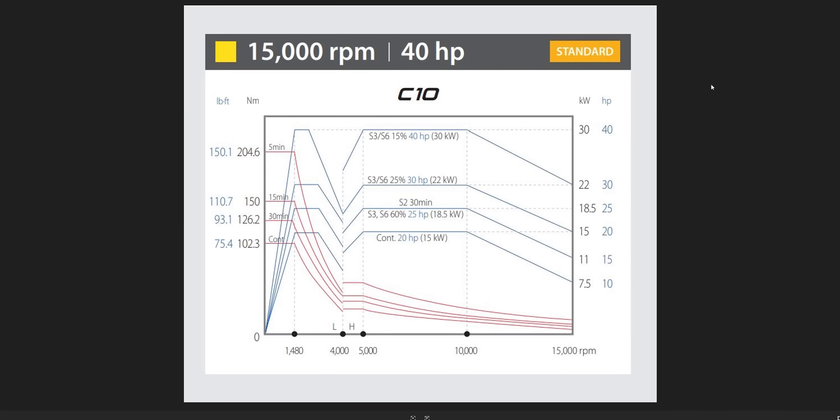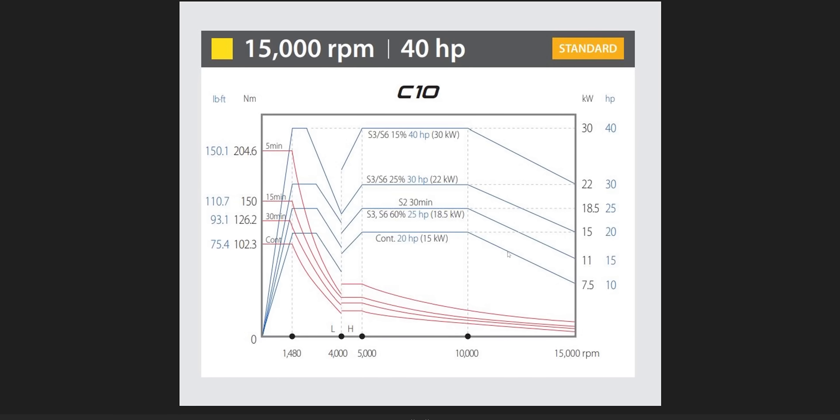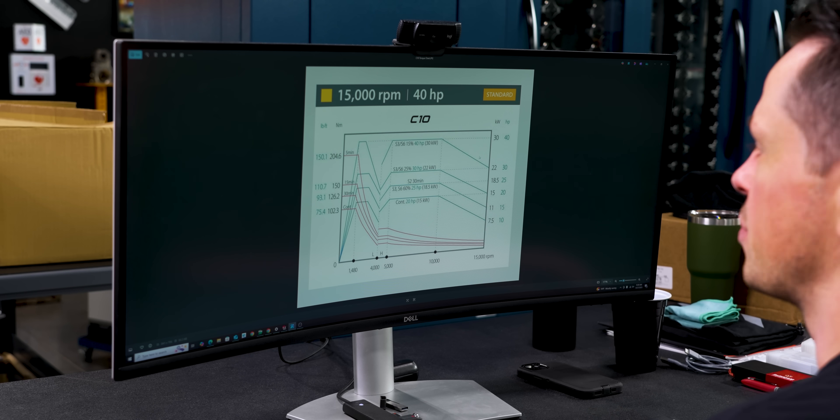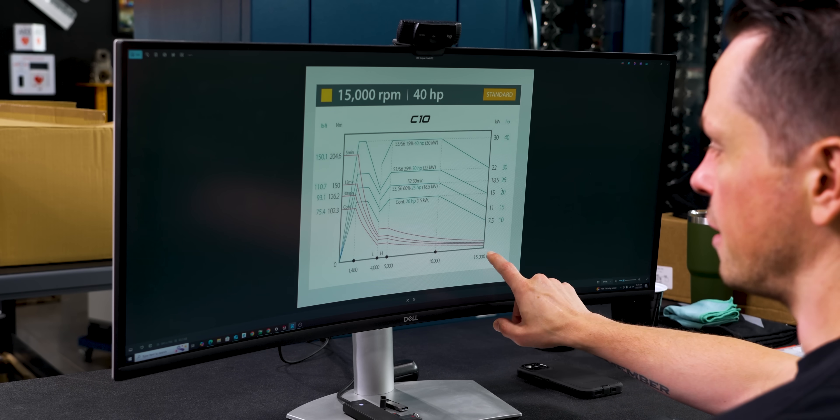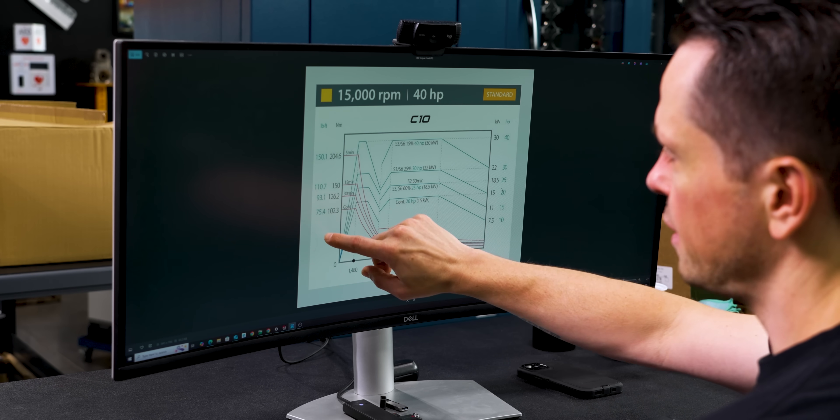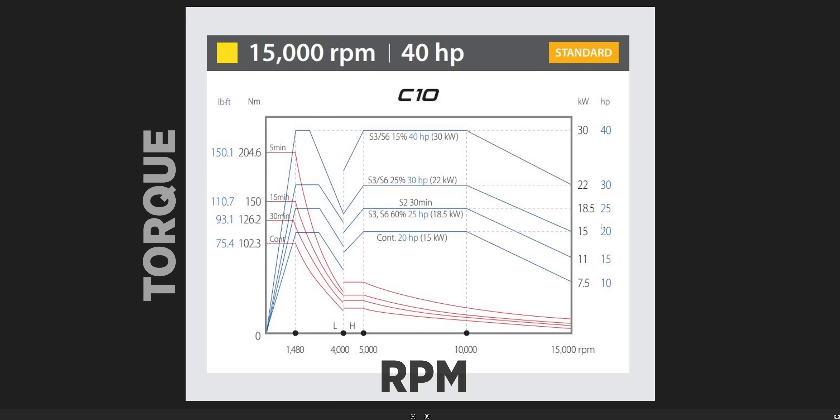The first thing we need to do is find our machine's torque and horsepower chart online. I've got our YCM C10 chart pulled up on my computer here. At first glance, it just looks like a bunch of numbers and lines. Really, I didn't understand these charts until yesterday when I watched one of Barry's old videos. So the x-axis is the RPM that we're running at. The y-axis on the left side is the torque, and on the right side we have horsepower.